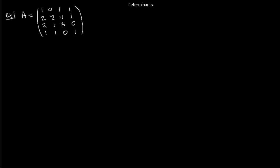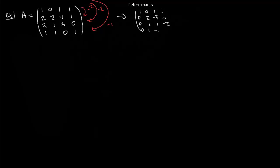Let's see an example. Start with the matrix: row 1 is 1, 0, 1, 1; row 2 is 2, 2, −1, 0; row 3 is 2, 1, 3, 0; row 4 is 1, 1, 0, 1. Do row operations to reduce to upper triangular form. To clear the first pivot, apply −2 times row 1 plus row 2, −2 times row 1 plus row 3, and −1 times row 1 plus row 4. Those operations clear the first column below the leading 1.